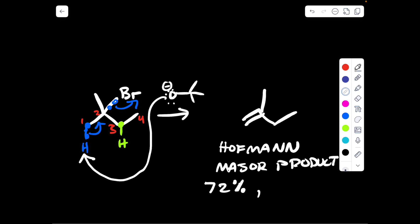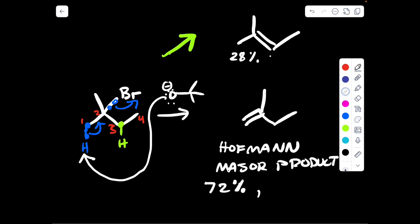And the other product — if the green hydrogen was stolen and we got the exact same thing as last time — this would be our minor product, the Zaitsev, and it actually comes in at 28% Zaitsev. So the majority of the product formed will be the Hoffman product if you use a base like OtBu.